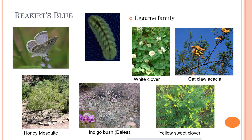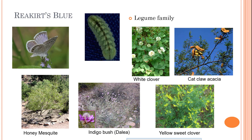Rikert's blue is another one that has a really similar looking caterpillar, and again it likes things in the legume family — honey mesquite, indigo bush, yellow sweet clover, catclaw acacia, and white clover. Those are all things they will want to lay their eggs on, and you might see those caterpillars feeding.